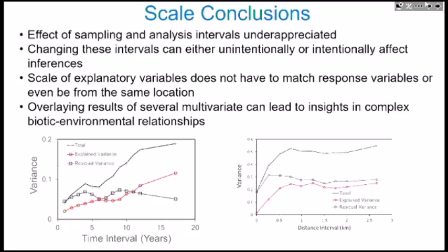An audience member asks about the lobster recovery: if you look a decade earlier around 1990–92, there was also a shift in structure — a big increase in lobster abundance. That shift might be interpretable the same way — also corresponding to a period when other species were changing. So the 1999 crash fits a pattern of decadal community shifts that may have favored lobsters in the early 1990s and then shifted again around 1999–2000.